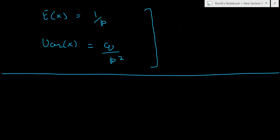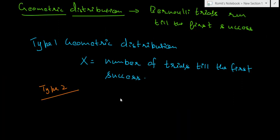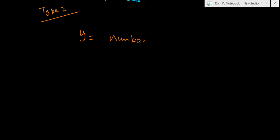The distribution we just discussed is called the Type 1 geometric distribution. There is also a Type 2 geometric distribution. Under Type 1, the random variable X models the number of trials until the first success — for example, how many times the student takes the exam until he passes. Under Type 2, the random variable Y models the number of failures before the first success.